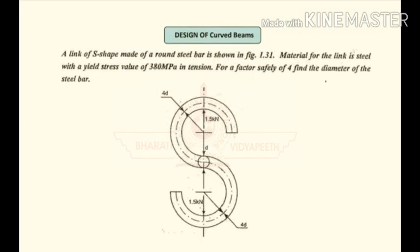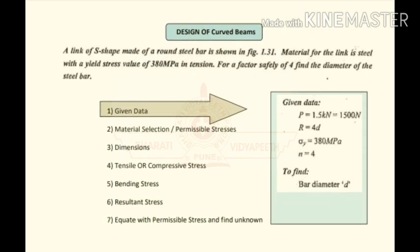The problem is a link of an S-shape made of a round steel bar as shown in the figure. The material for this link is steel with a yield stress value of 380 MPa. For a factor of safety of 4, find the dimension of the steel bar. The S-shaped link has a given diameter D, which is the cross-sectional diameter we have to find.